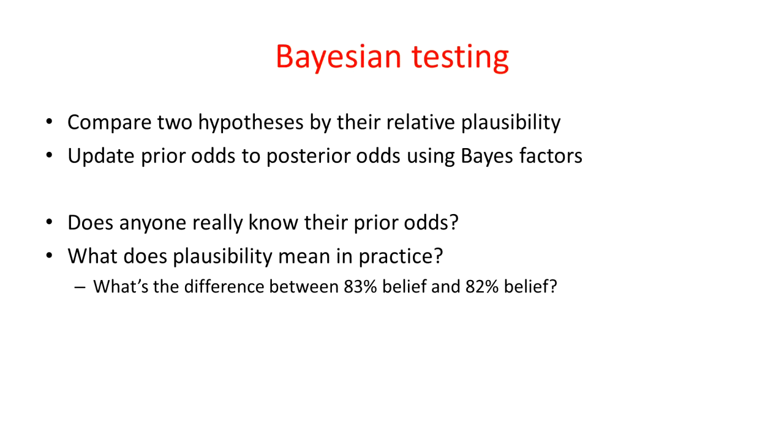With Bayesian testing, we compare the relative plausibility or belief we have in two hypotheses. Our initial relative belief is specified in the prior odds. We then update the prior odds to posterior odds by using Bayes factors, which contrast the evidence for the two hypotheses.